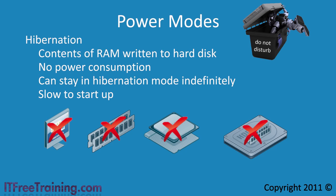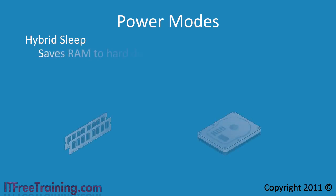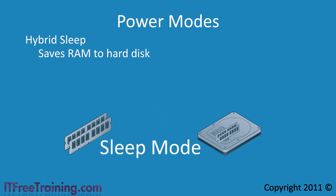The last mode that Windows 7 supports is hybrid sleep. This combines both hibernation and sleep together. When the laptop enters hybrid sleep mode, the contents of RAM are saved to the hard disk. Once this is complete, the computer goes into sleep mode. If the computer is woken up from sleep mode, the computer is quick to start up because the contents of RAM are still available and don't have to be read from the hard disk.